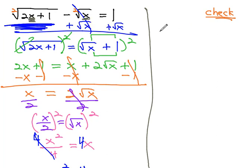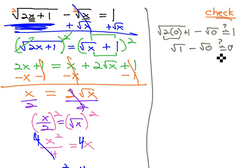Let's start with the 0. The square root of 2 times 0 plus 1 minus the square root of 0 equals 1. Well, 2 times 0 is 0, so we have the square root of 1 minus the square root of 0. And sure enough, 1 minus 0 is 1. It does check out, so that answer works.